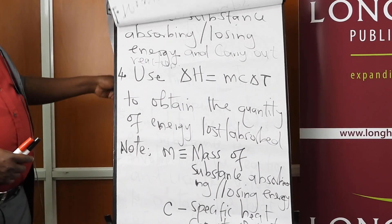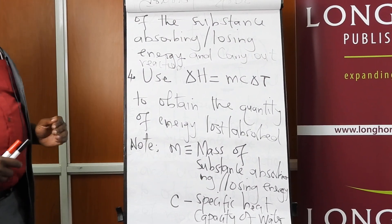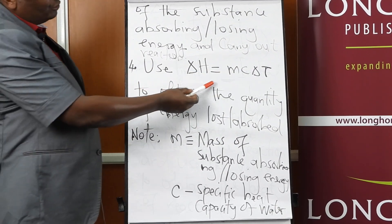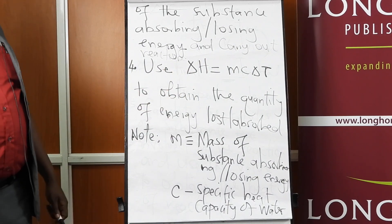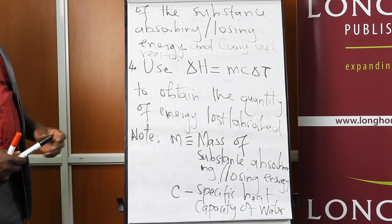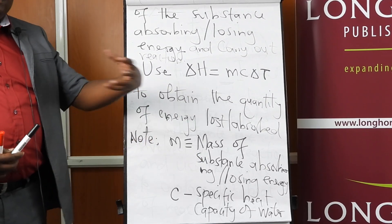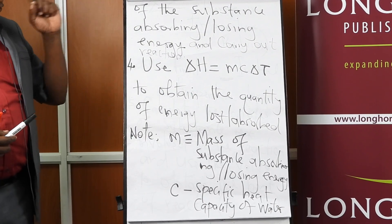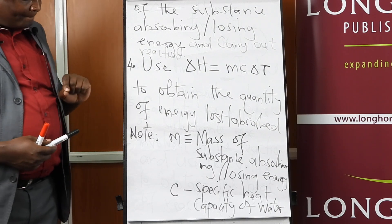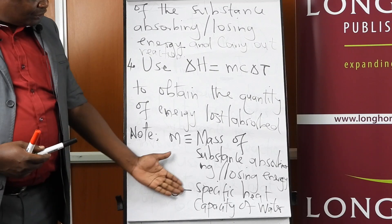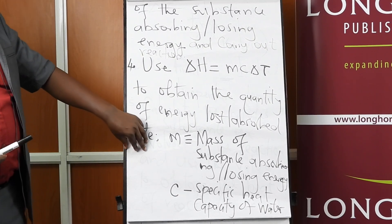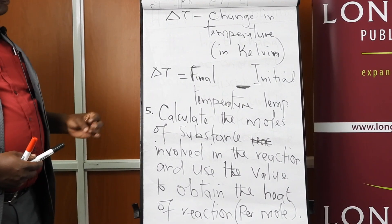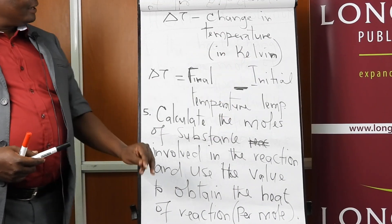After determining those values, we use the relationship delta H = mcΔT to work out the amount of energy either released or absorbed, where m is the mass of the substance absorbing energy — not the mass of the substance reacting — and c is the specific heat capacity of water. Delta T is the change in temperature in Kelvin, calculated as final temperature minus initial temperature.